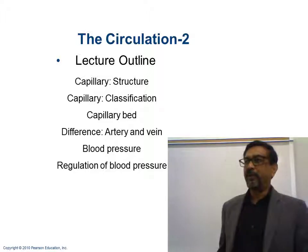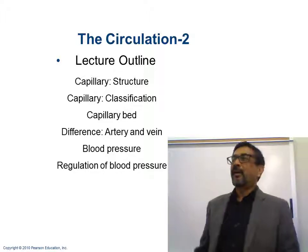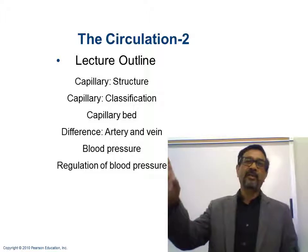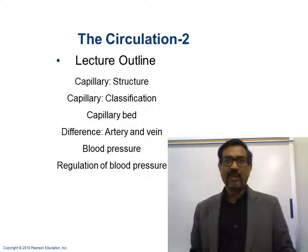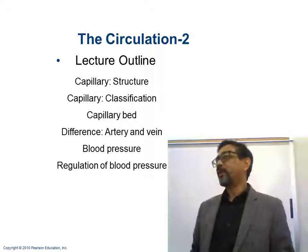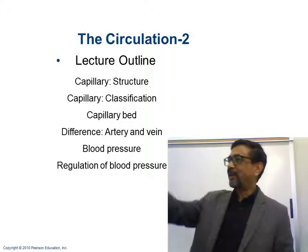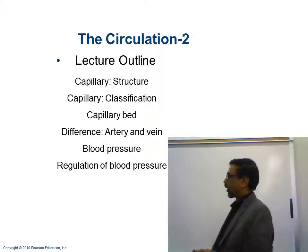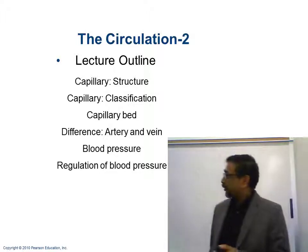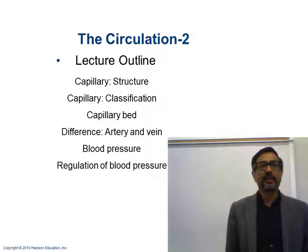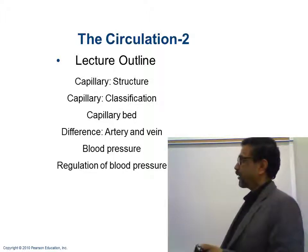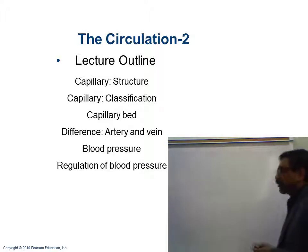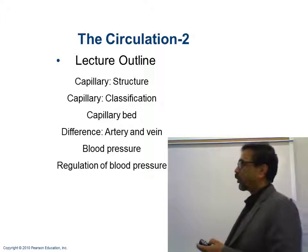Arteries take the blood away from the heart — large arteries give blood to smaller arteries. Veins bring the blood towards the heart, so smaller veins give blood to larger veins, and larger veins bring the blood to the heart. This picture shows the major veins of your body, but remember there are many other smaller veins not shown here.